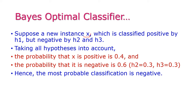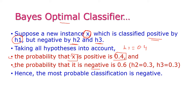Suppose a new instance x is to be classified using this optimal classifier. It is classified as positive by h1, but negative by h2 and h3. So the probability that x is positive is 0.4 (since h1 = 0.4), and the probability that x is negative is 0.6, because h2 = 0.3 and h3 = 0.3, giving a total of 0.6.